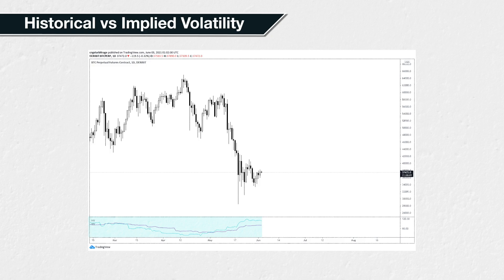While we can measure historical volatility over different time periods, giving different figures, they are all a measure of the actual price movements that have already happened. This can be a useful metric to look at and will affect market participants' decisions. However, historical volatility is not based on current option prices.